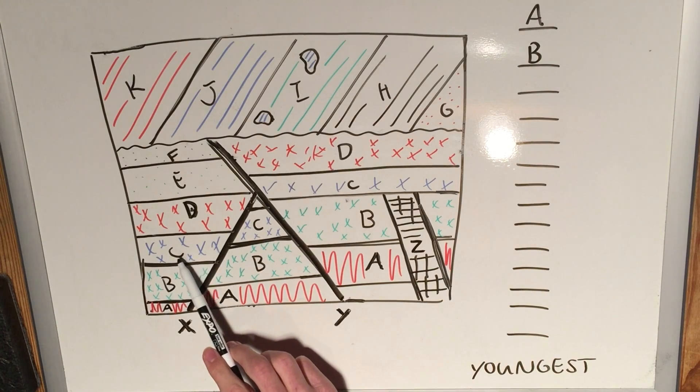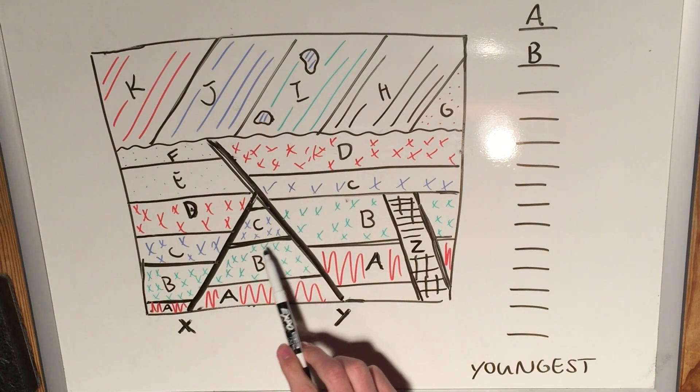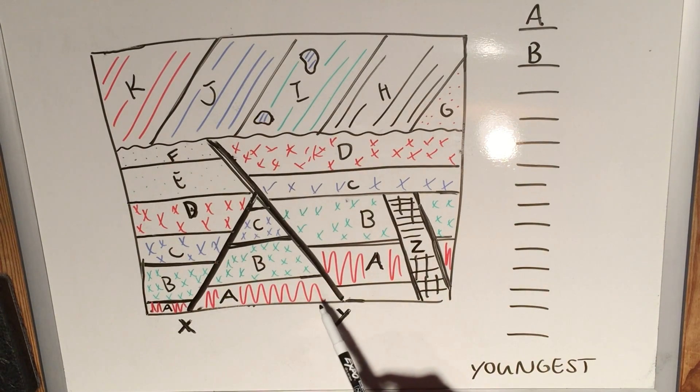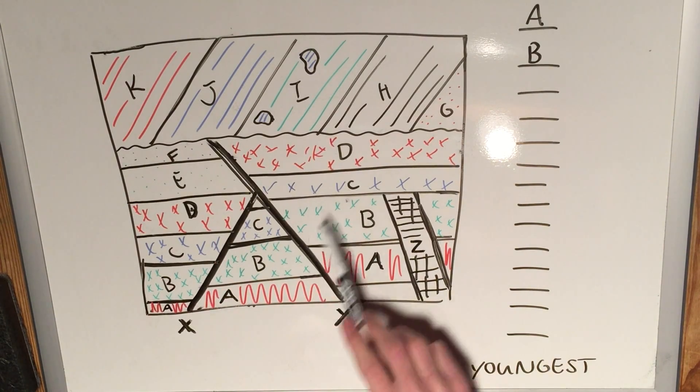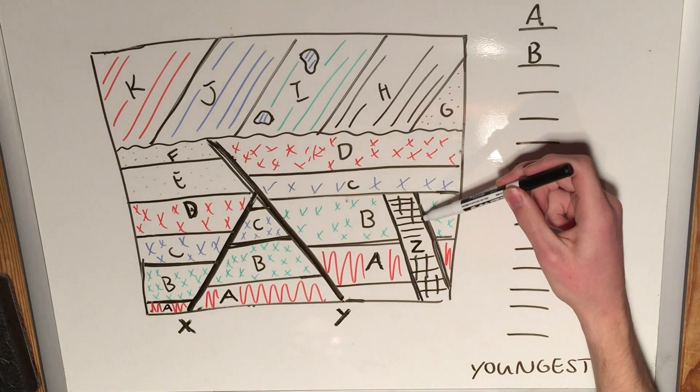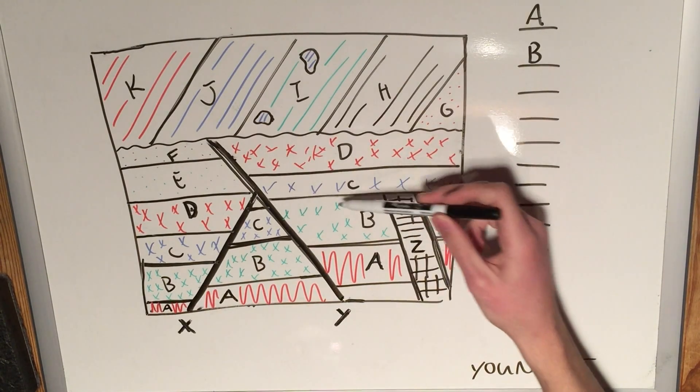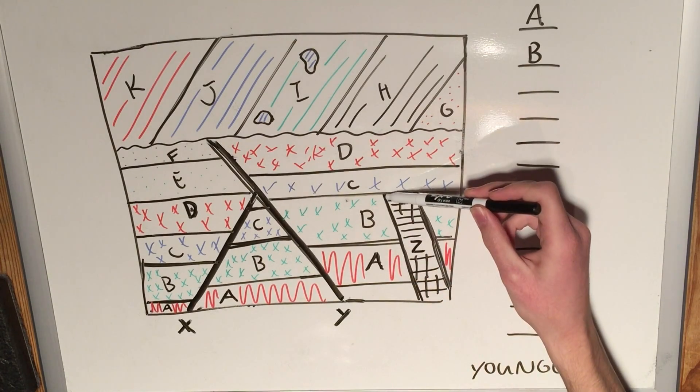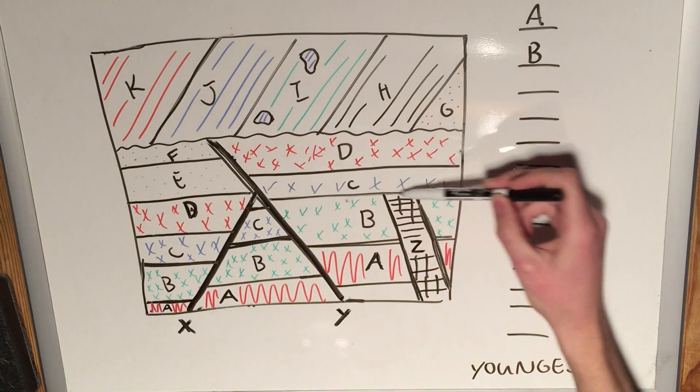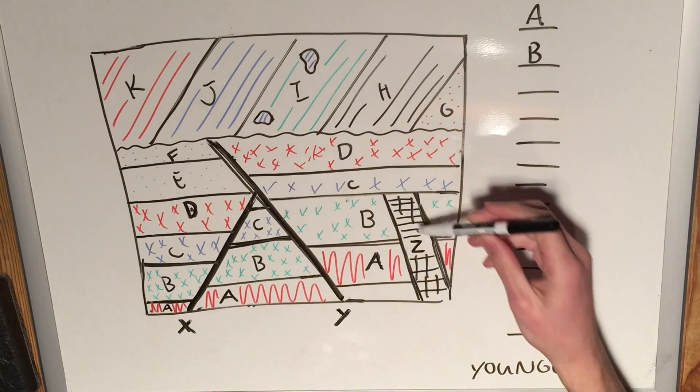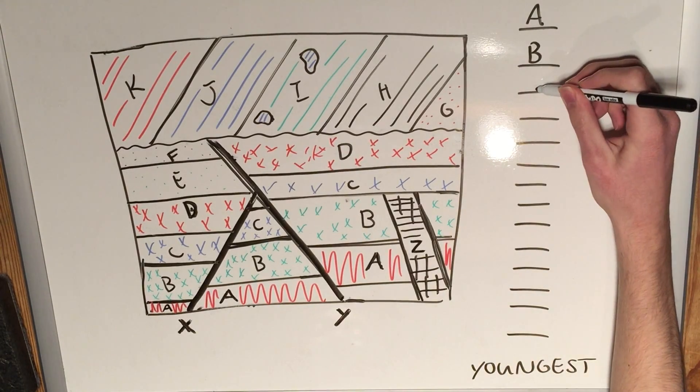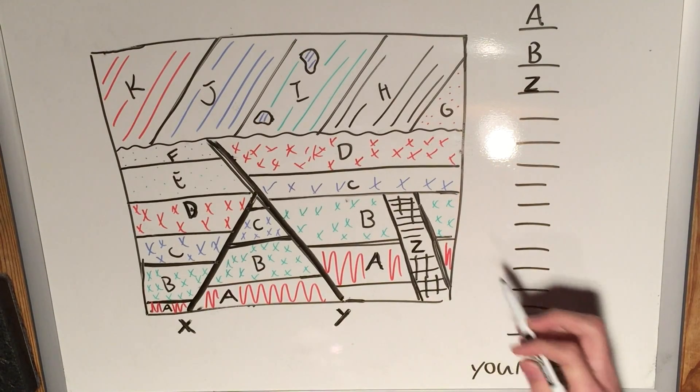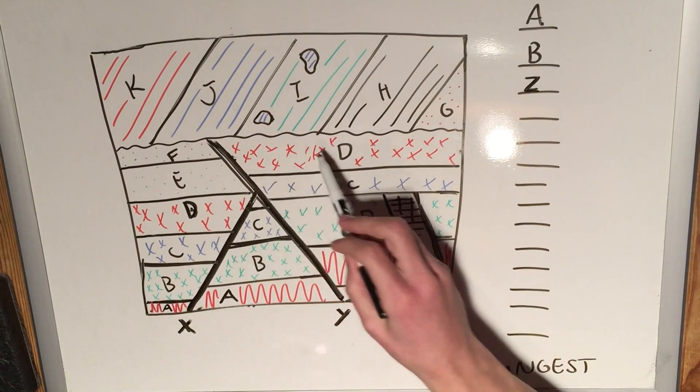Let's move on to C. C is above B in all cases with the fault. It is still affected by all of the faults, so it's not younger than X or Y. But then over here we can see that Z does not cut through C, which means likely this surface right here was eroded, which stopped the intrusion here, and then C was deposited on top of it. So Z actually must come next in the sequence.